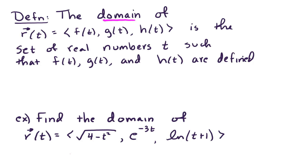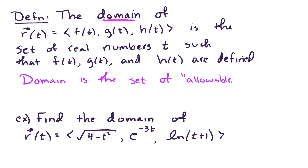In this video we're going to talk about the domain of a vector-valued function. Let's begin with a definition and then we'll do an example. The domain of R of t with component functions f of t, g of t, h of t, is the set of real numbers t such that f of t, g of t, and h of t are defined. The domain is really the set of legal inputs or allowable inputs or input values.